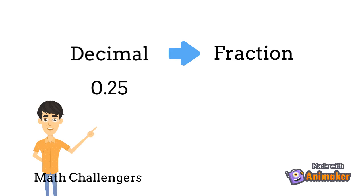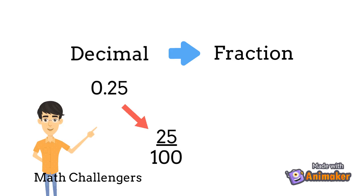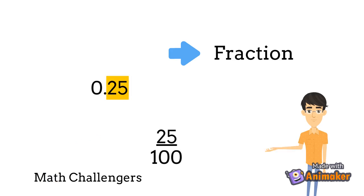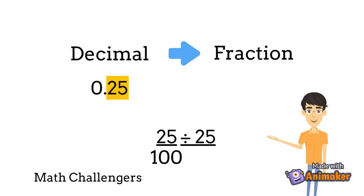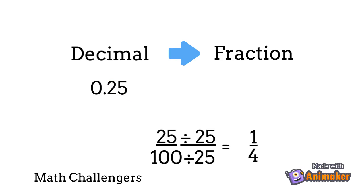To change 0.25 to a fraction: the digit on the left of the decimal point is 0, so there is no whole number. The digits on the right, which is 25, become the numerator, and the denominator is 100 because we have 2 decimal places. Since 25/100 is not in its lowest term, divide both by their GCF of 25: 25 ÷ 25 = 1 and 100 ÷ 25 = 4. So 0.25 in fraction is 1 fourth.